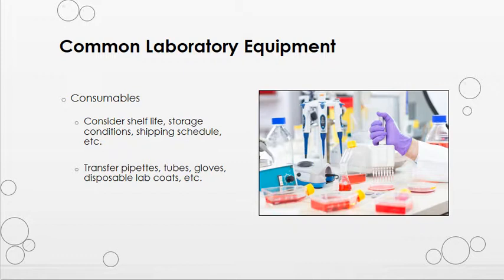Now we're going to move on and talk about common lab equipment. When we talk about consumable supplies, we are referring to disposable items such as transfer pipettes, tubes, gloves, disposable lab coats, pipette tips, slides, and so on. When ordering these supplies, we must consider the shelf life or expiration dates, storage conditions — does it have to be refrigerated, frozen, or can it sit at room temperature — and we must also consider shipping schedules.